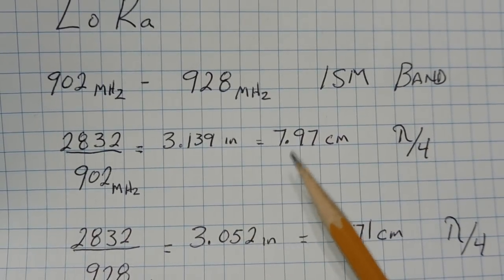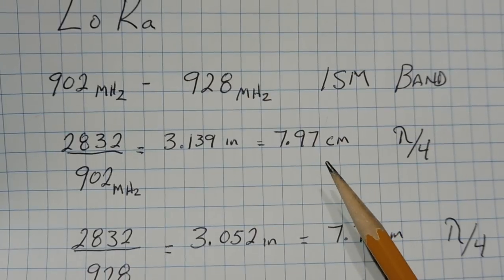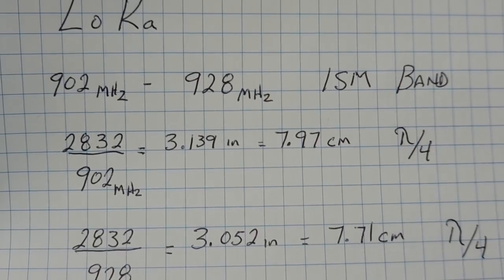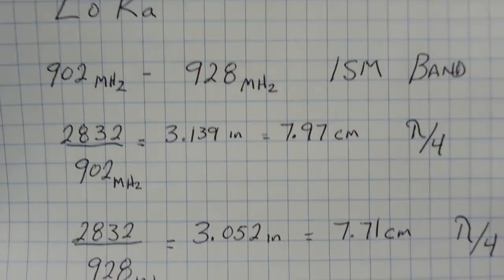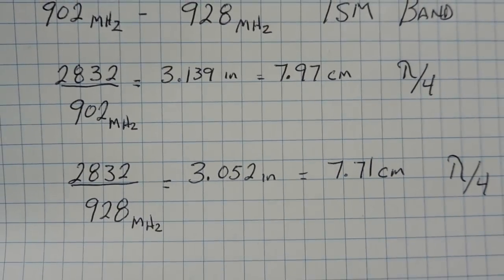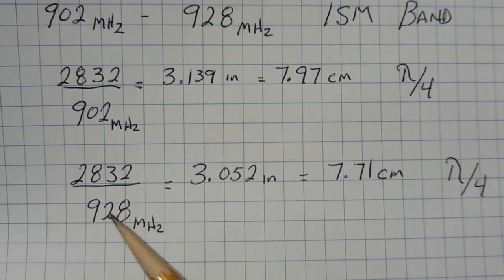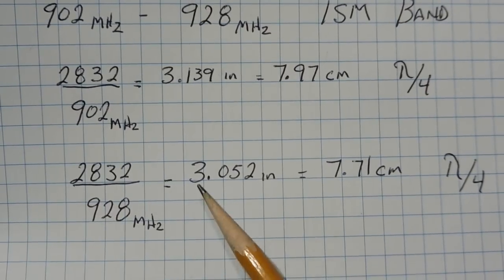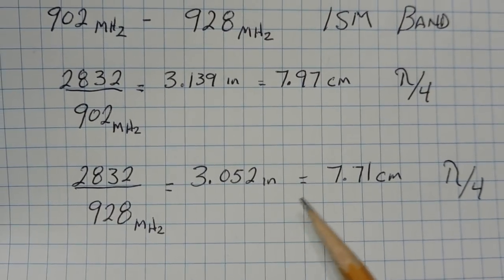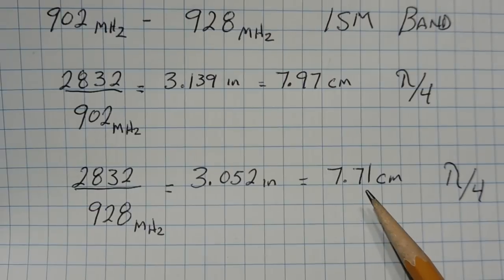Which is our quarter wavelength for our radials and radiator. Now if you go to the high end, 928 megahertz, so we take 2832 divided by 928 megahertz, we get 3.052 inches, which equals 7.71 centimeters.